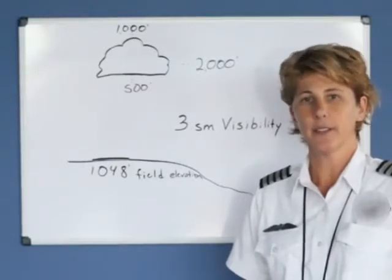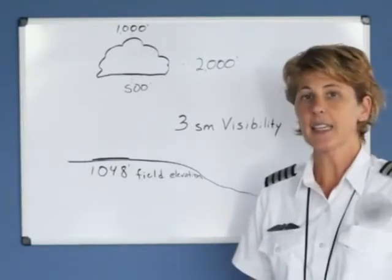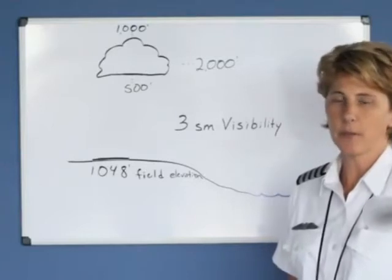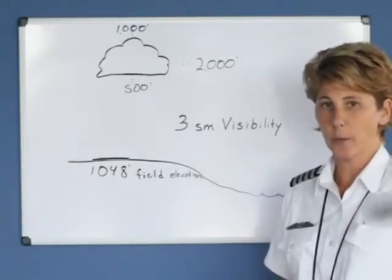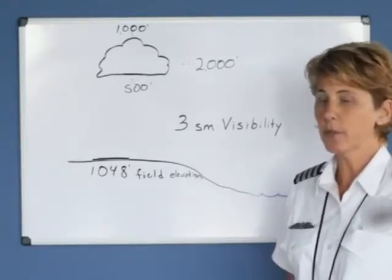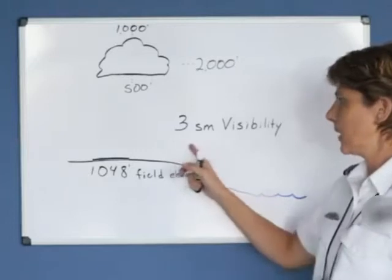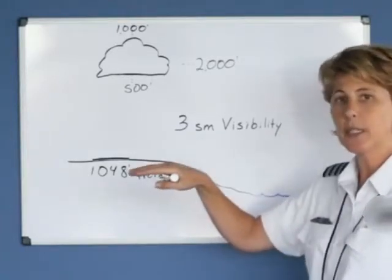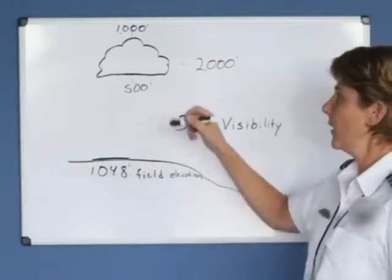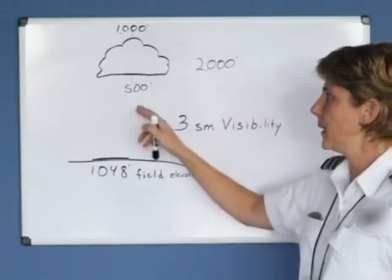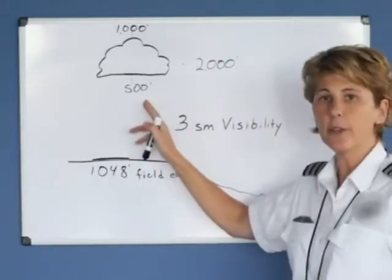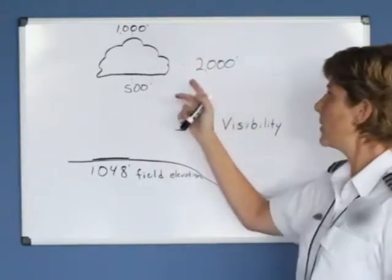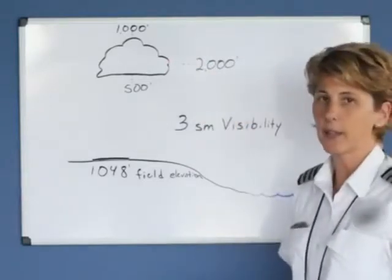This airport, Greenville Downtown, is a Class D airspace. In Class D airspace, the visibility and cloud clearance rule required for VFR is three statute miles visibility — that's the horizontal visibility we can see. Our distance from clouds requires us to be at least 500 feet below the clouds, 1,000 feet above the clouds, and 2,000 feet beside the clouds.